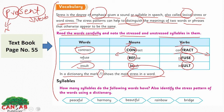In a dictionary, a mark like an apostrophe shows the main stress in the word. So how many syllables do the following words have? Also identify the stress pattern of the words using a dictionary. For example, C-O-N is one syllable and 'tract' is another syllable.